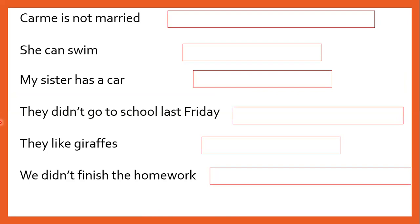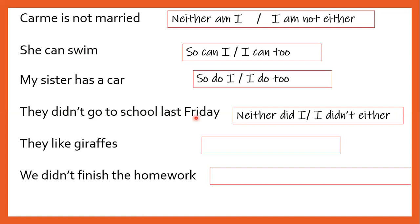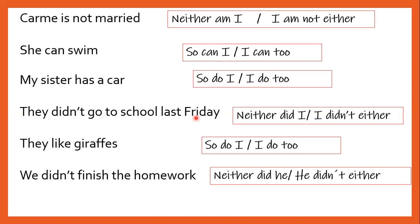You are going to try to answer this exercise. For example: 'Carmen is not married' — the answer would be 'Neither am I' or 'I am not either.' 'She can swim' — 'So can I' or 'I can too.' 'My sister has a car' — 'So do I' or 'I do too.' 'They didn't go to school last Friday' — 'Neither did I' or 'I didn't either.' Excellent!